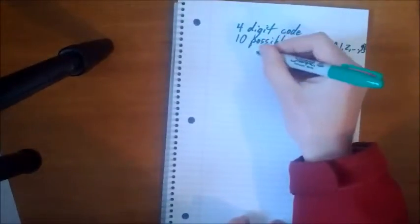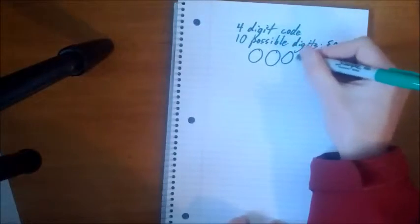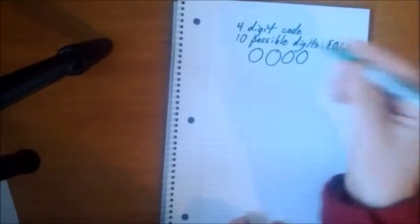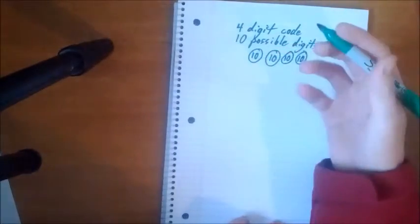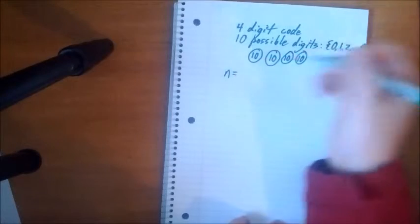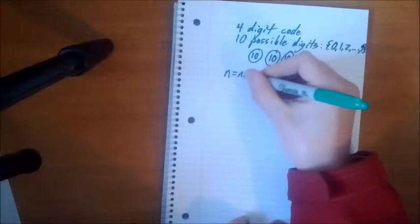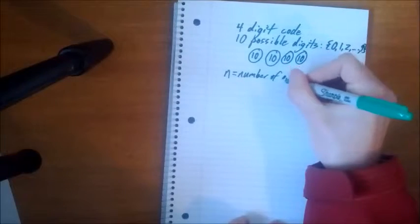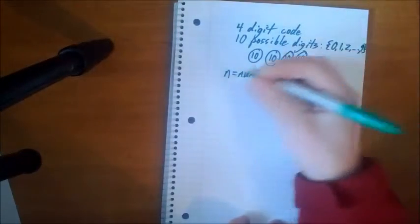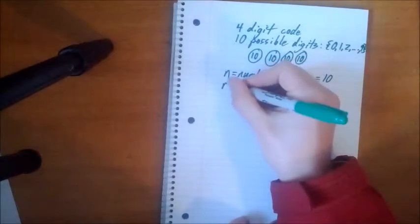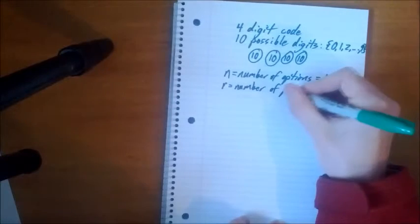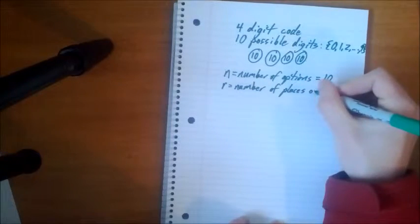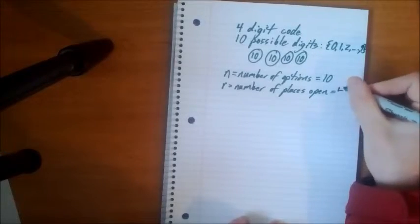So that is 10 possible digits. You have four spots open. And in each of these spots you can have one of 10 digits. So for the rest of the video we will be using terms N and R. So N is the number of options you have. In this case it's 10. And R is the number of places that are open. And in this case it's four.